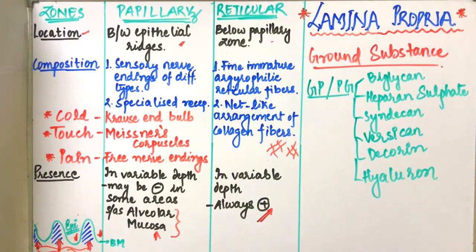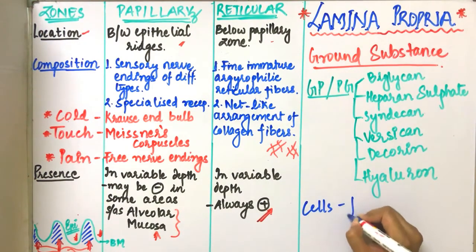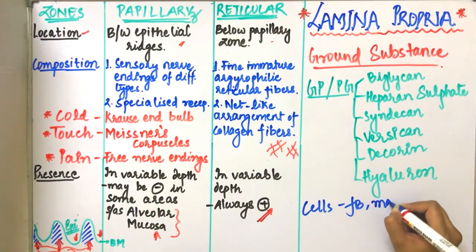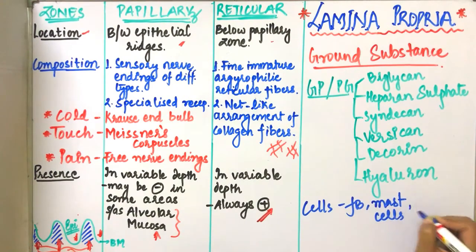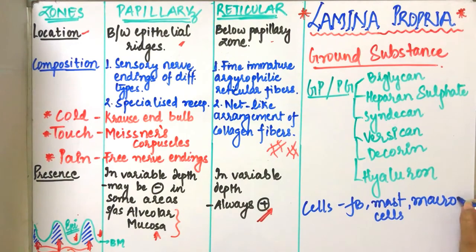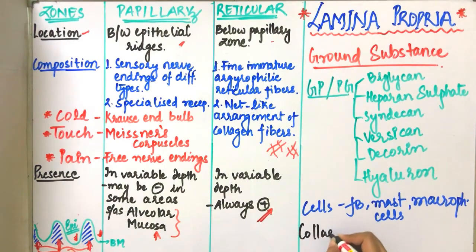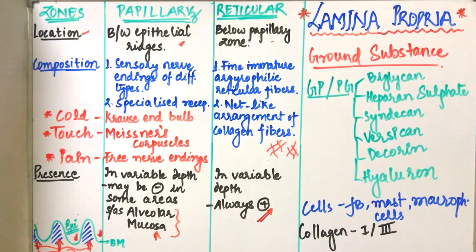The cells present include fibroblasts, mast cells, and macrophages. The collagen present here is type 1 and type 3. The lining mucosa is lined by elastic fibers, which restore the tissue after stretching and do not allow it to accumulate in bundles. This is the composition of the lamina propria.